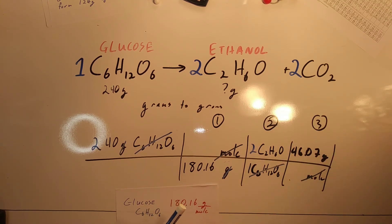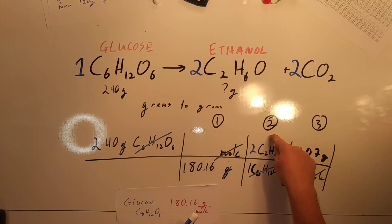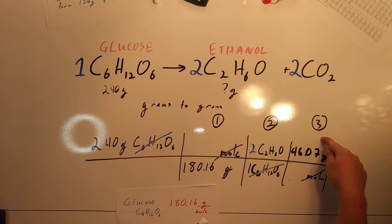That is solving a grams-to-grams problem in three steps. Using the periodic table, the balanced chemical reaction, and the periodic table again.